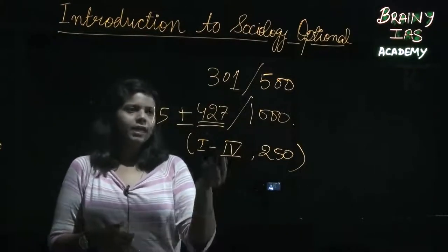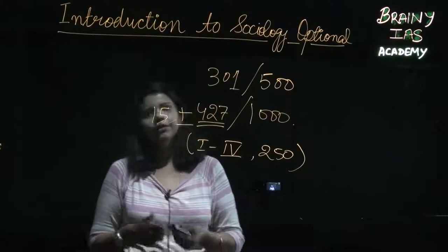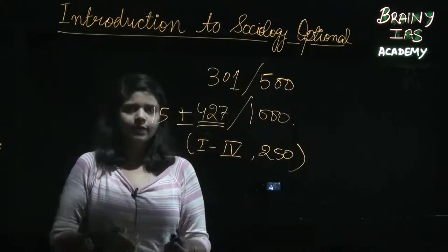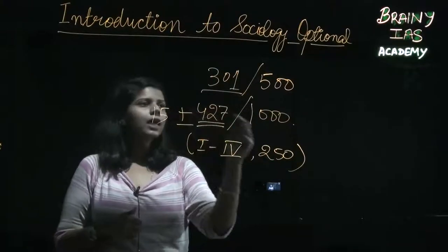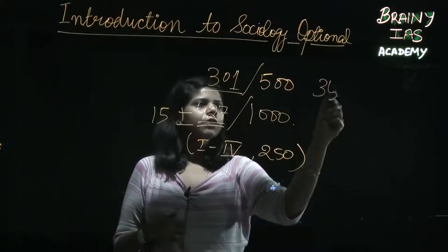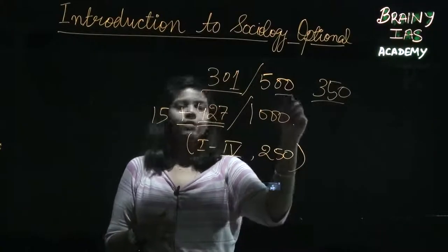The highest can go as much as 440 or something on that side. But in case of optional, you can score as high as even 350 out of 500. That's like straight 49 marks or 50 marks jump.